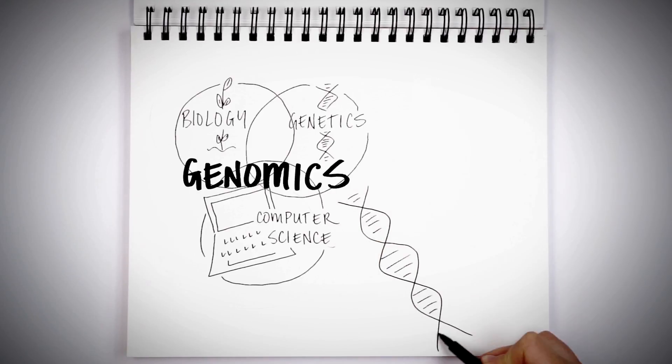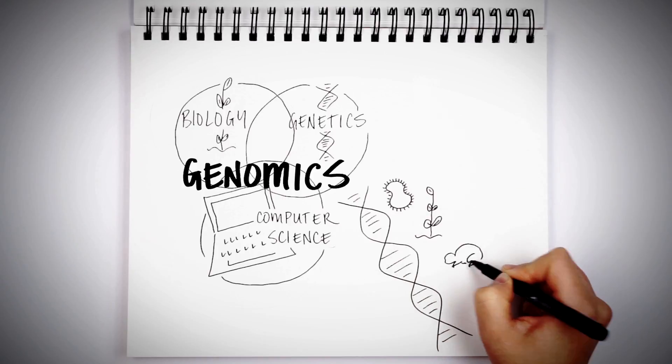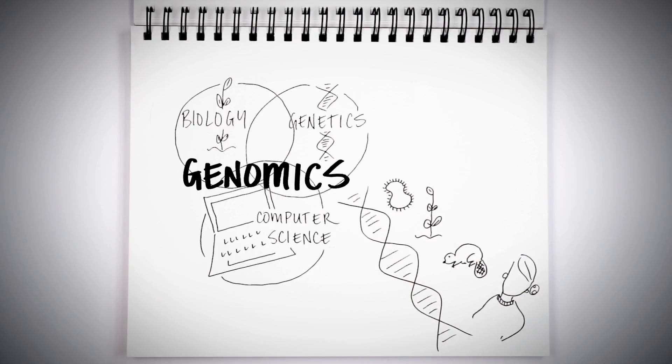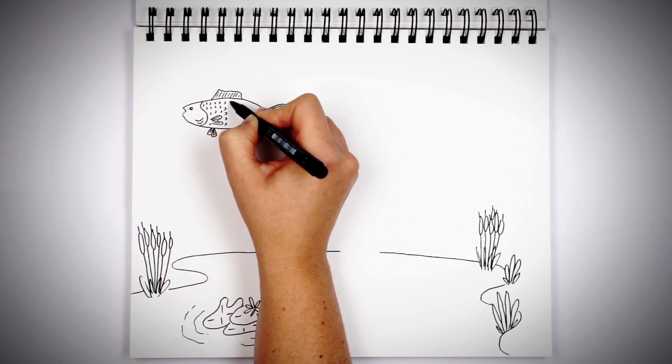In the environmental space, that means everything from single-celled microbes to plants, animals, and humans. Each living thing has a unique genome.